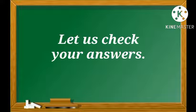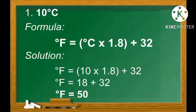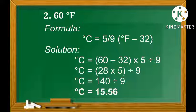Now let us check your answers. Number 1: Convert 10 degrees Celsius to degrees Fahrenheit using the formula °F = °C × 1.8 + 32. Substituting: 10 × 1.8 = 18, plus 32 equals 50. So 10 degrees Celsius is equal to 50 degrees Fahrenheit.